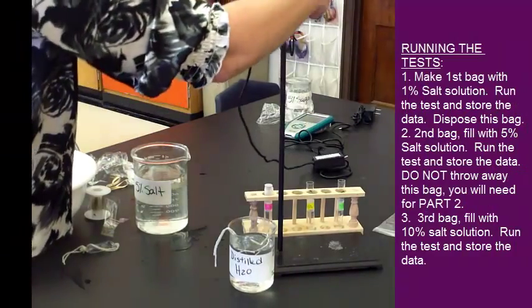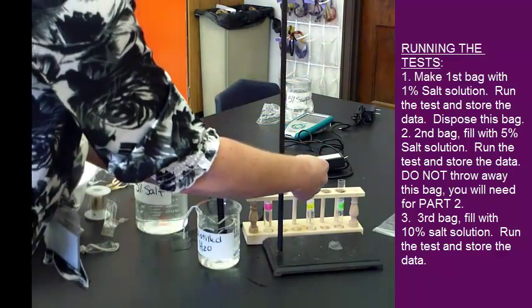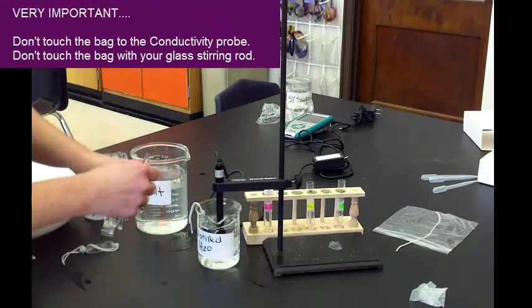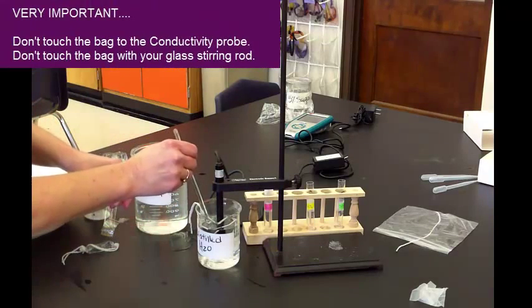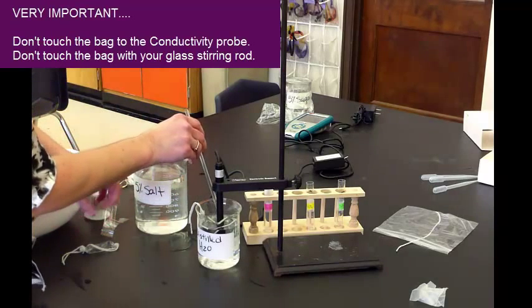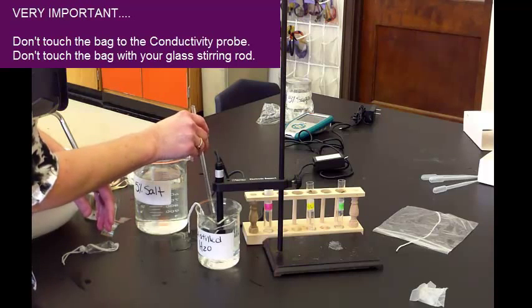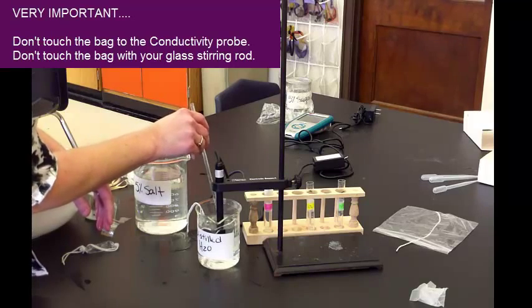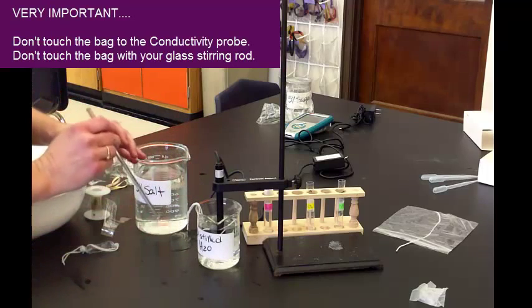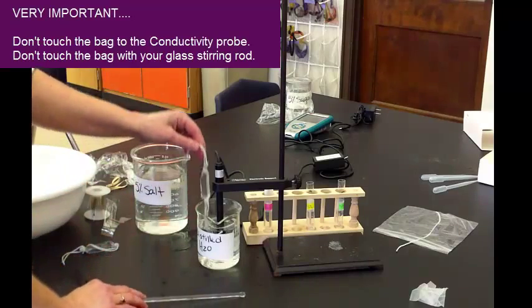So I've got my conductivity probe. I'm going to lower it into the water. Don't make the bag until you're ready to collect the data. Now, here's the important part. Take your stirring rod. If you poke the bag, and you see a spike on your graph, which is on your LabQuest, that means you touch the bag, and you push the ions out. So, you just want to make a little current, and just kind of move it or wiggle it around, but don't touch the bag. Make sure the bag is not touching the probe, and it's run for a certain amount of time, and then you stop it, and then we are finished.